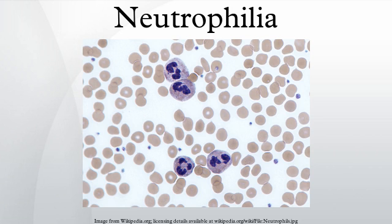Neutrophilia describes a high number of neutrophil granulocytes in blood. Neutrophils are the primary white blood cells that respond to a bacterial infection, so the most common cause of neutrophilia is a bacterial infection, especially pyogenic infections.